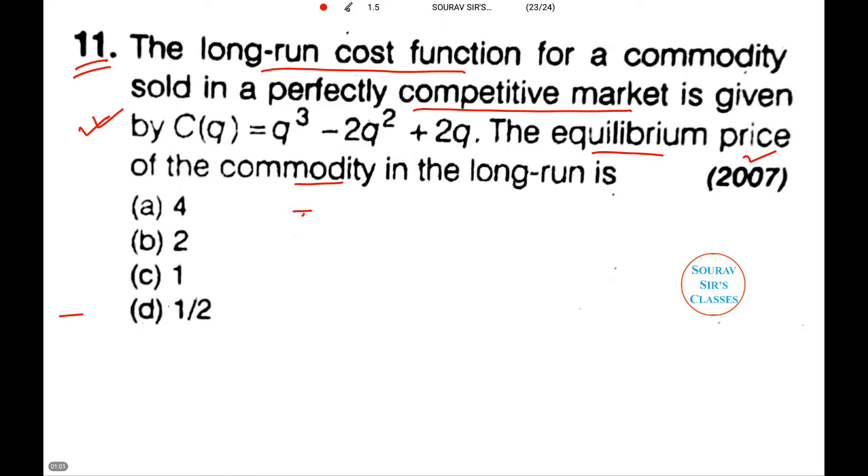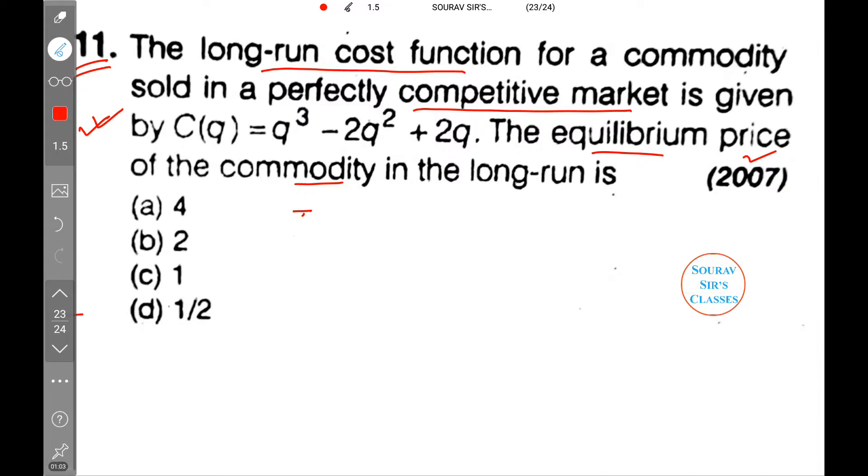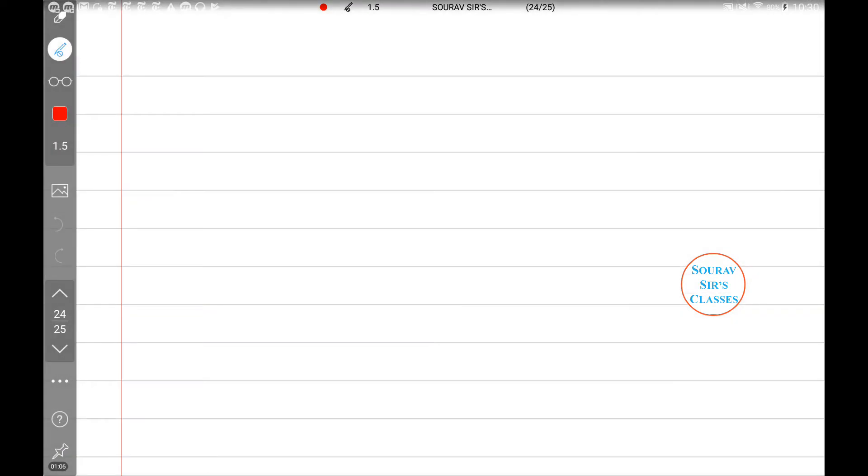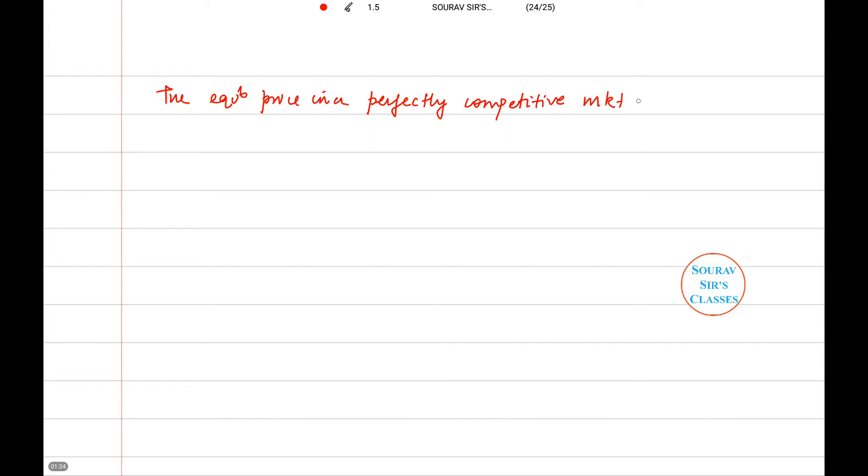Let me insert a page. So the equilibrium price in a perfectly competitive market in the long run is at the minimum point of average cost curve. And if you can't remember this, just recall the diagram that you used to make.